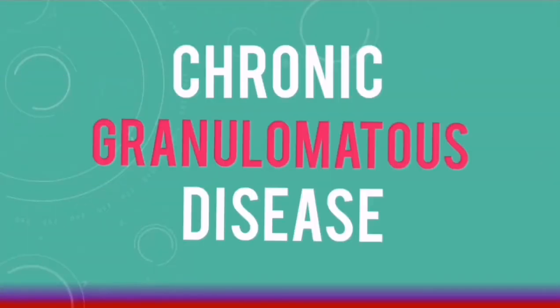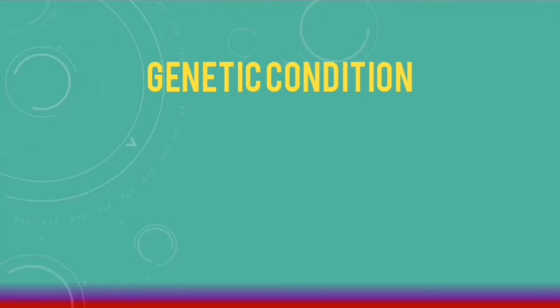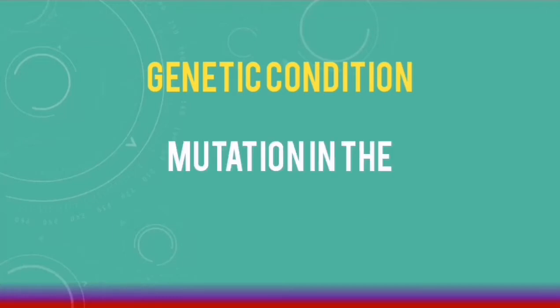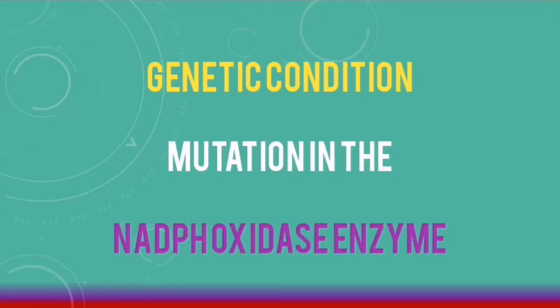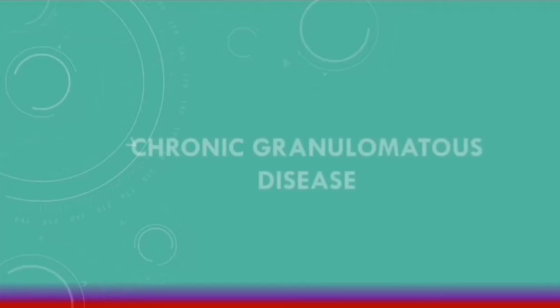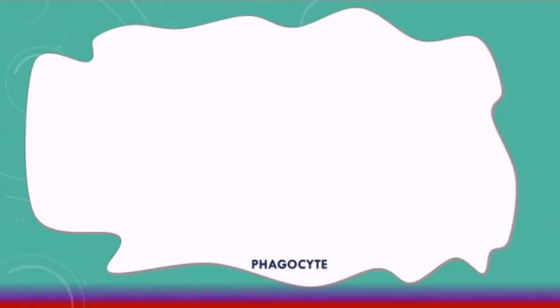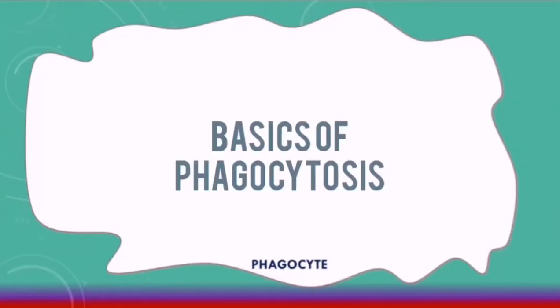Chronic granulomatous disease is a genetic condition that causes a mutation in the NADPH oxidase enzyme. Let's review the basics of chronic granulomatous disease, starting with a review of phagocytosis.